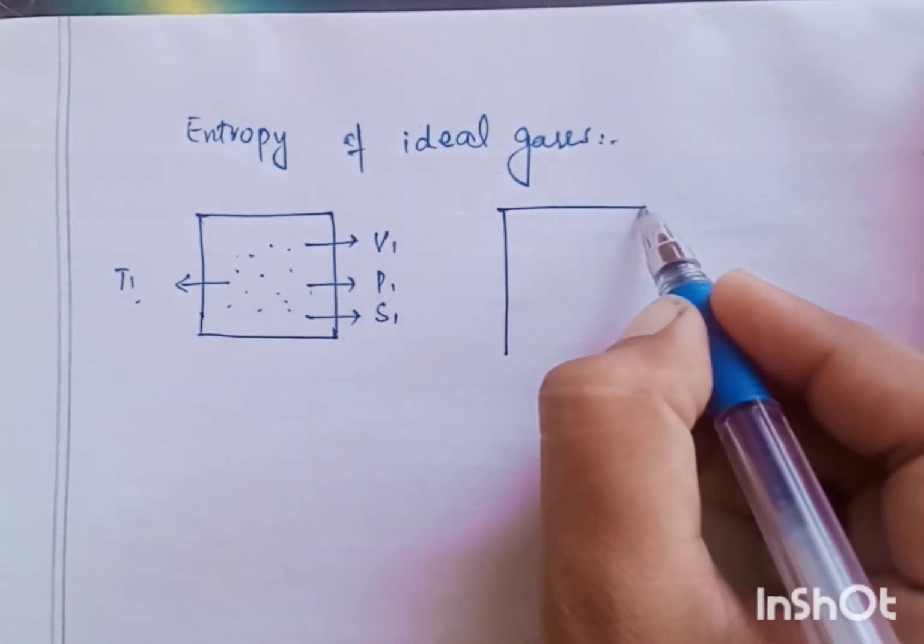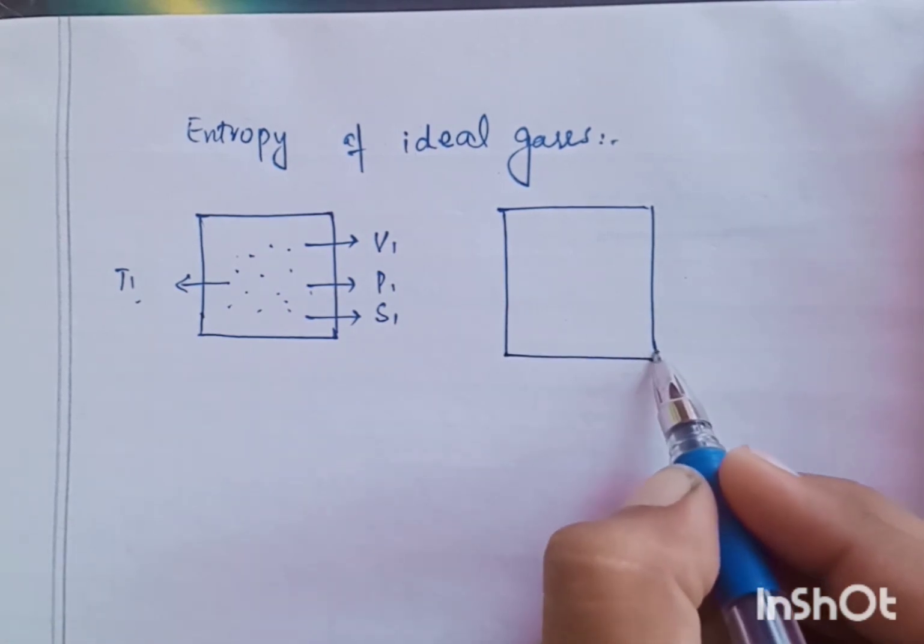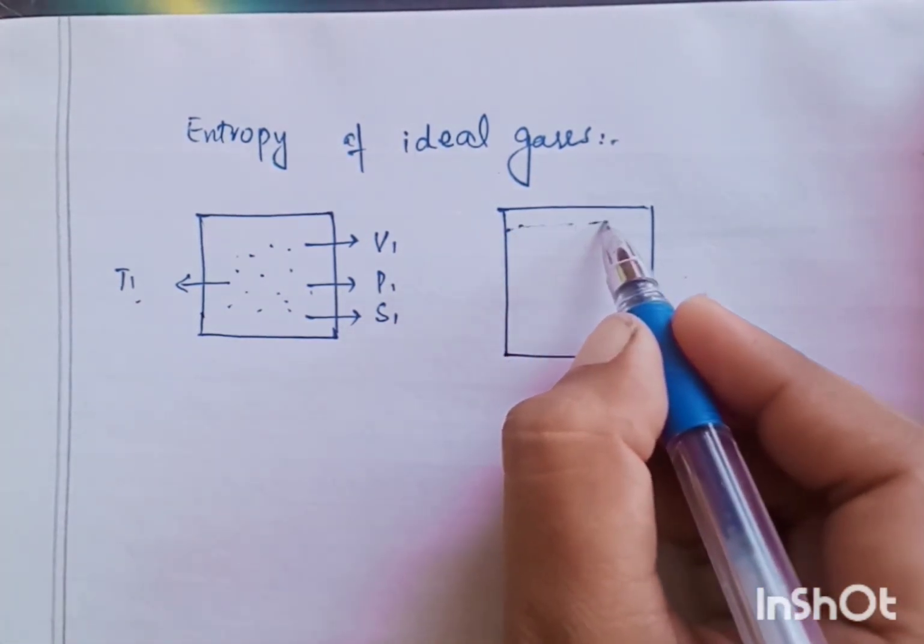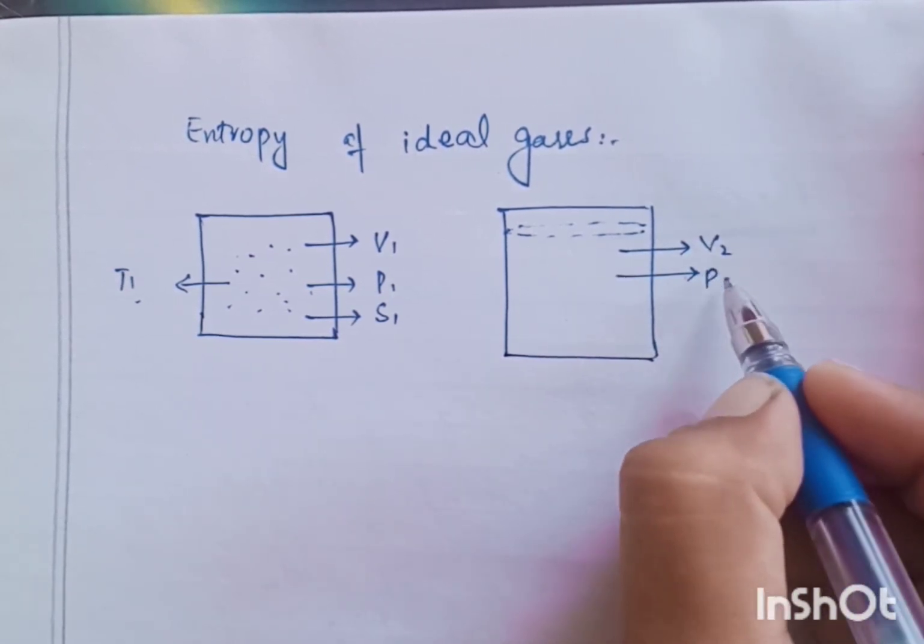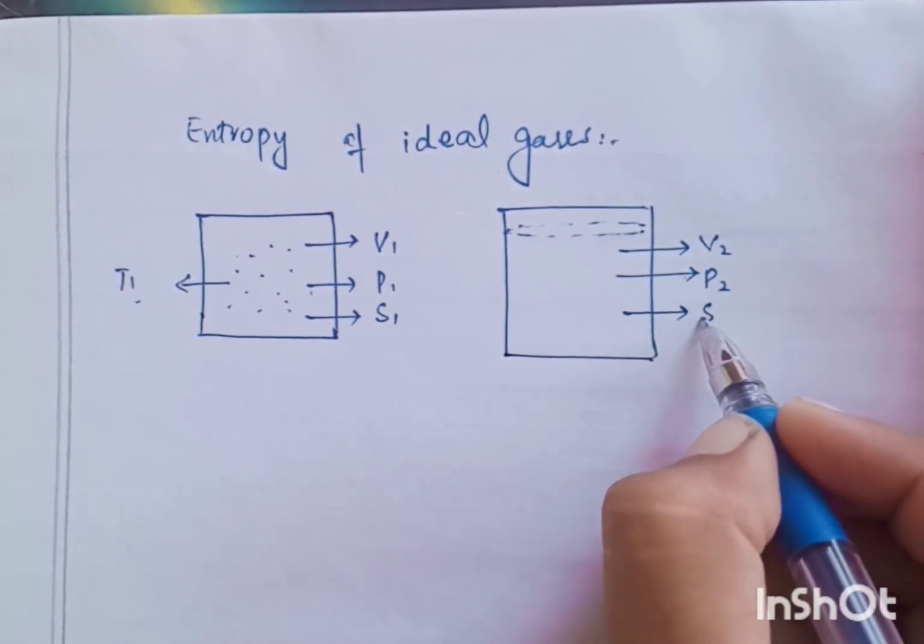Suppose we provided heat temperature to it. Its volume increases from V1 to V2, pressure from P1 to P2 and its entropy increases S2.